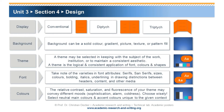When it comes to the design of an academic poster, the display form is of importance. A conventional display form is one-sided, open-faced. A diptych consists of two divided segments, often indicating two ideas. A triptych poster is often used in the natural sciences. The background of an academic poster can be a solid color, gradient, picture, texture, or pattern fill. A theme for the poster may be selected in keeping with the subject of the work, institution, or to maintain a consistent aesthetic.